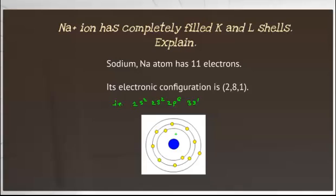This figure shows the electronic configuration of sodium. This is the sodium nucleus. We have K, L and M shells. In the K shell, we have 2 electrons. In the L shell, we have 8 electrons. And in the M shell, we have only 1 electron.